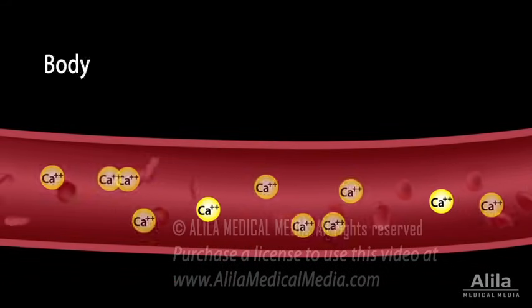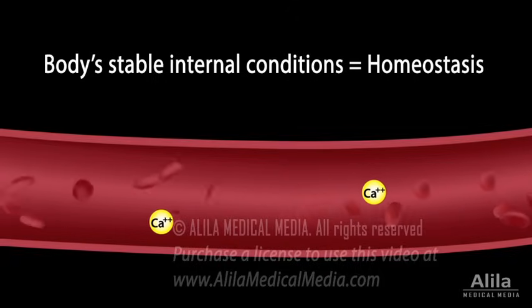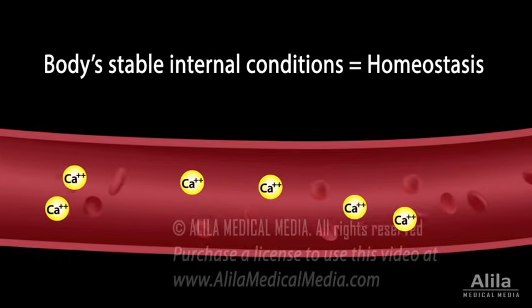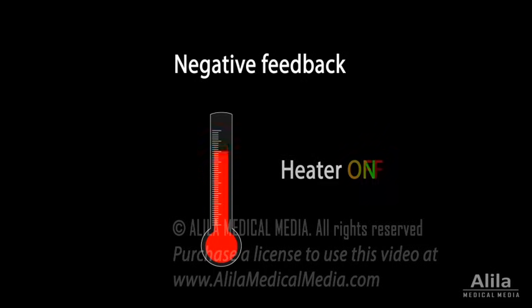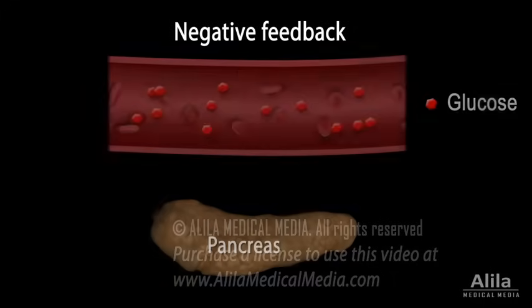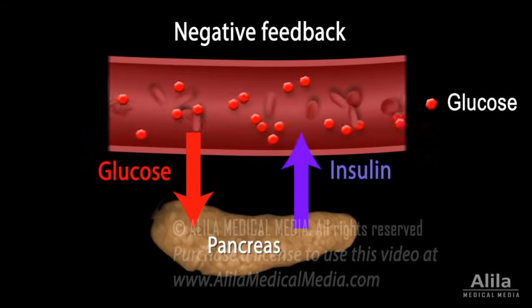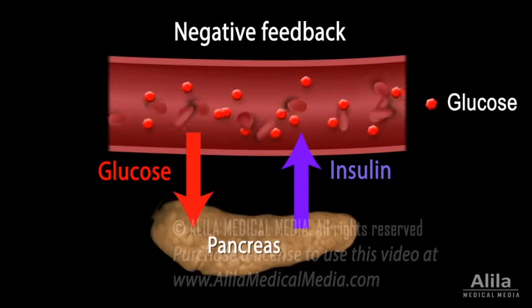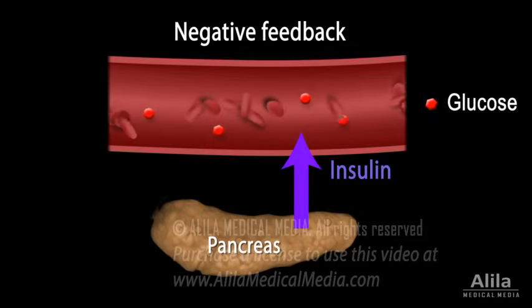A major role of the endocrine system is to maintain the body's stable internal conditions, or homeostasis, such as blood sugar levels or serum calcium levels. To do this, it utilizes negative feedback mechanisms, which work very much like a thermostat — the heater is on when the temperature is low, off when it's high. For example, when blood glucose level is high, such as after a meal, glucose induces insulin release from the pancreas. Insulin helps body cells consume glucose, clearing it from the blood. Low blood glucose can no longer act on the pancreas, which now stops releasing insulin.